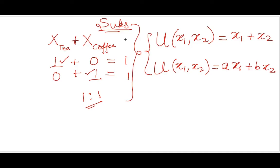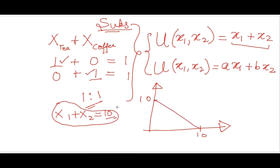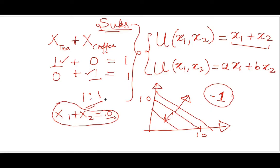These are the two utility functions which can be used to represent substitutes — abbreviated as 'subs'. Let's plot x1 plus x2. Assume utility equals 10; this is a straight line with intercept 10 on both axes. If you increase from 10 to 12 utility goes up; decrease to 9 or 7 or 6, it goes down. Moving up increases utility since you have more of good one and good two. The slope of this line is minus one because the ratio is one-to-one.